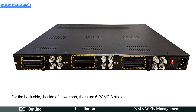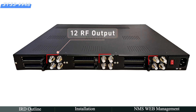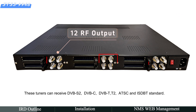On the back side there are six PCMCIA slots supporting 12 PCMCIA cards for descrambling — each slot can insert two cards. There are also 12 RF inputs; these tuners can receive DVB-S2, DVB-C, DVB-T/T2, ATSC, and ISDB-T standards.